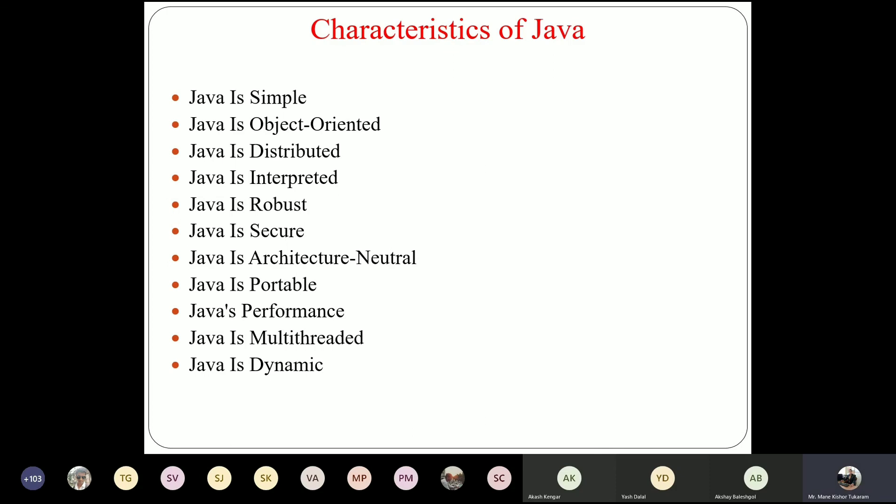These are the buzzwords — features or characteristics of Java: Simple, Object-Oriented, Distributed, Interpreted, Robust, Secure, Architecture-Neutral, Portable, Performance, Multi-threading, and Dynamic. These are the different characteristics by which Java has become a popular language.